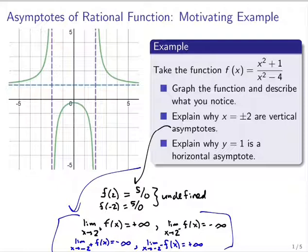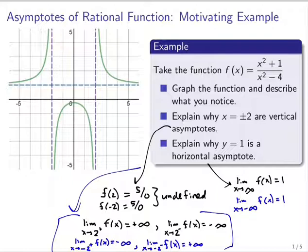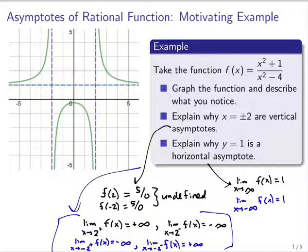y equals one is a horizontal asymptote because this function approaches one as I zoom very far to the right or very far to the left. It approaches one going either to positive infinity or negative infinity, but just one of those alone would be enough for me to say that y equals one deserves to be a horizontal asymptote on this graph. But that's just the overview — let's get into the nitty-gritty details to convince ourselves using mathematical analysis why these things are happening.